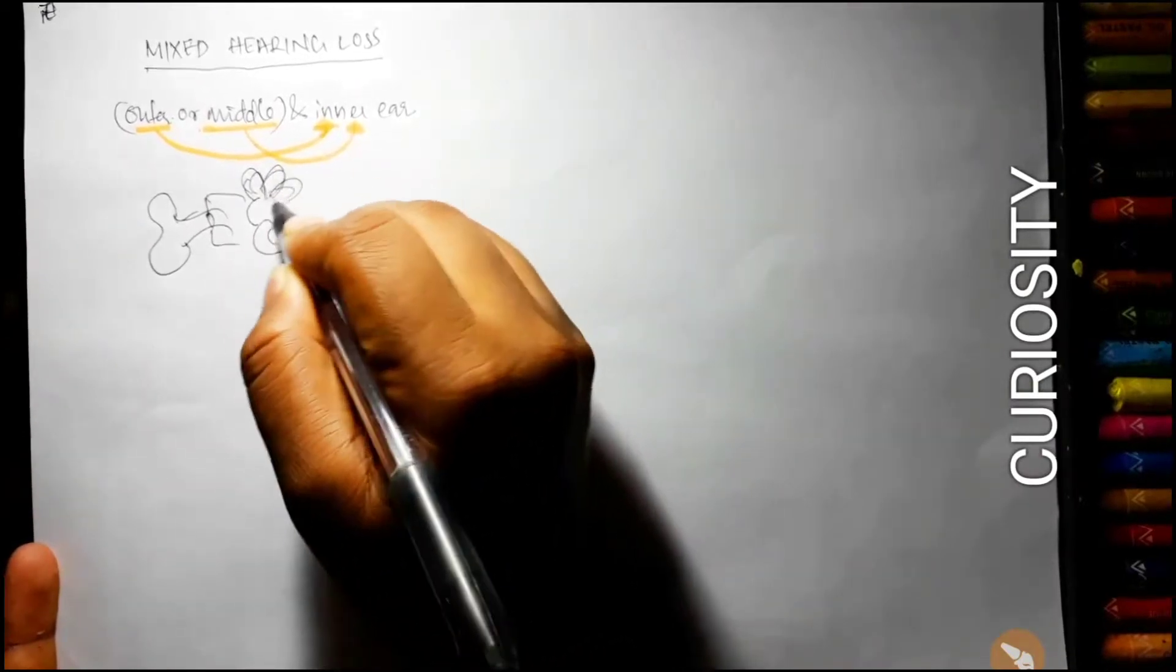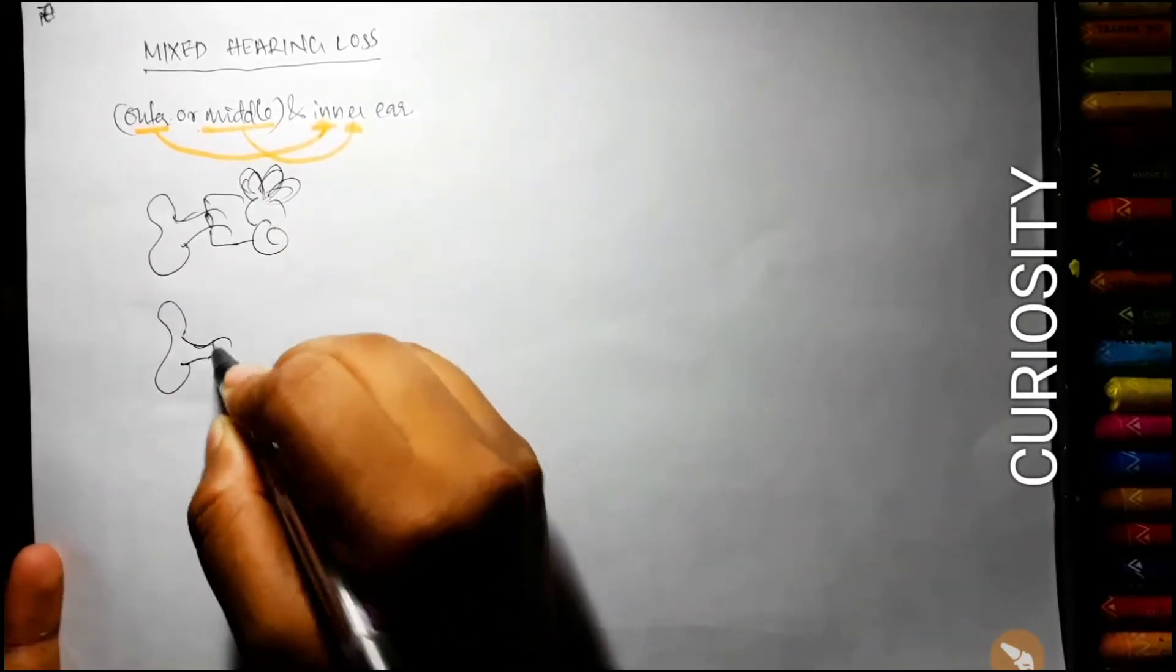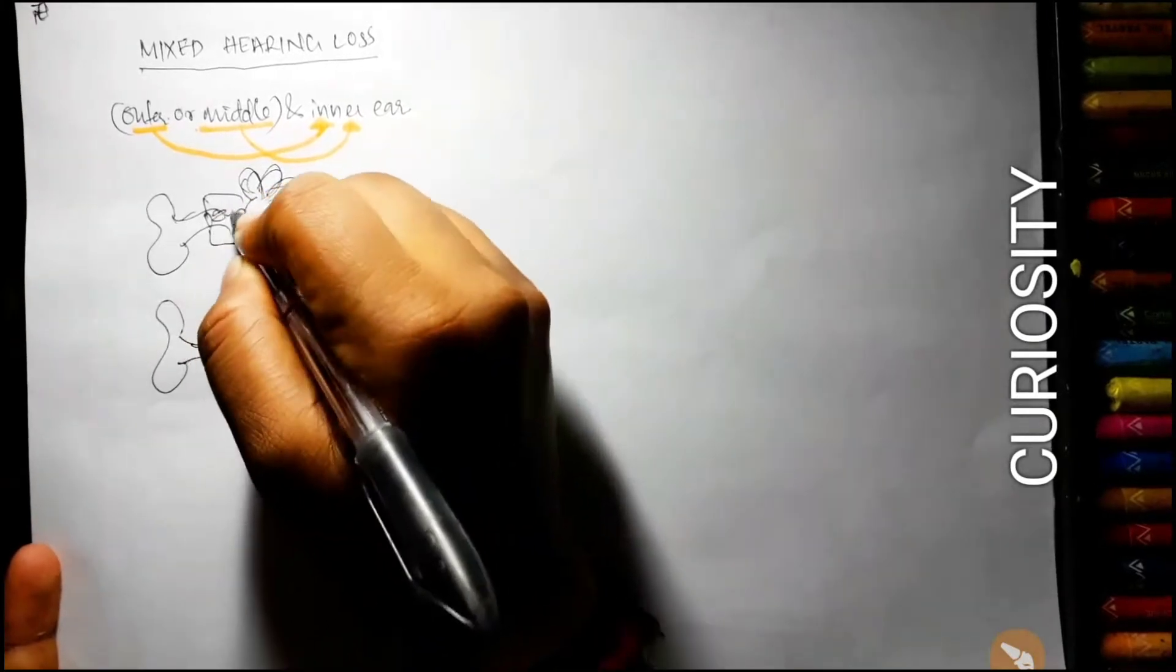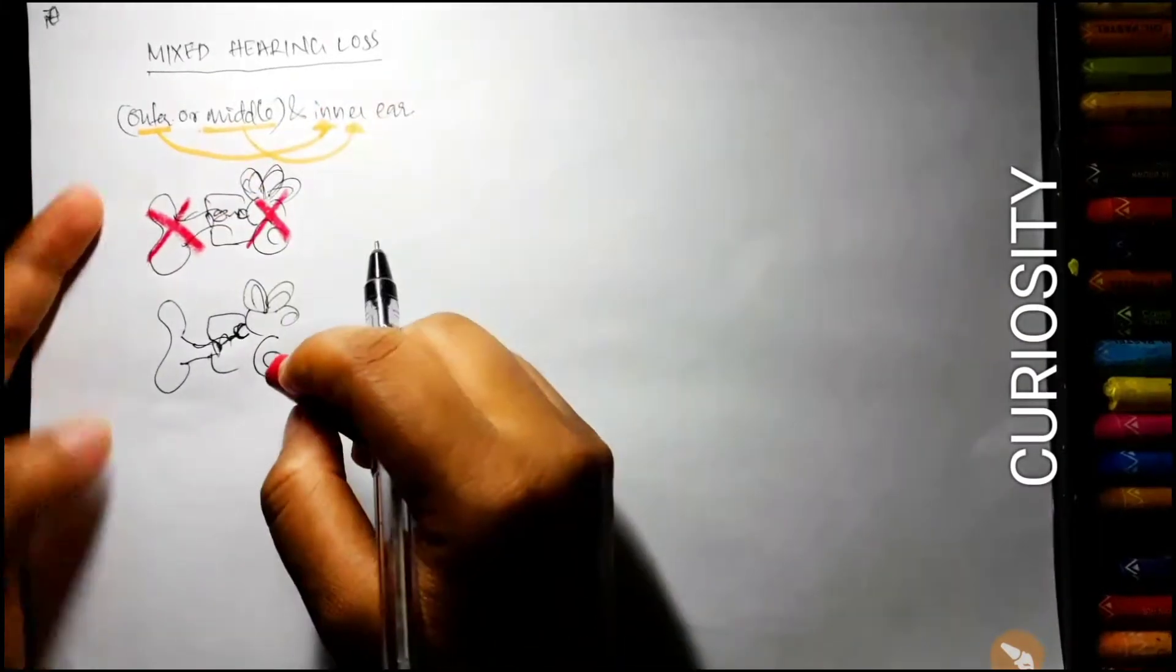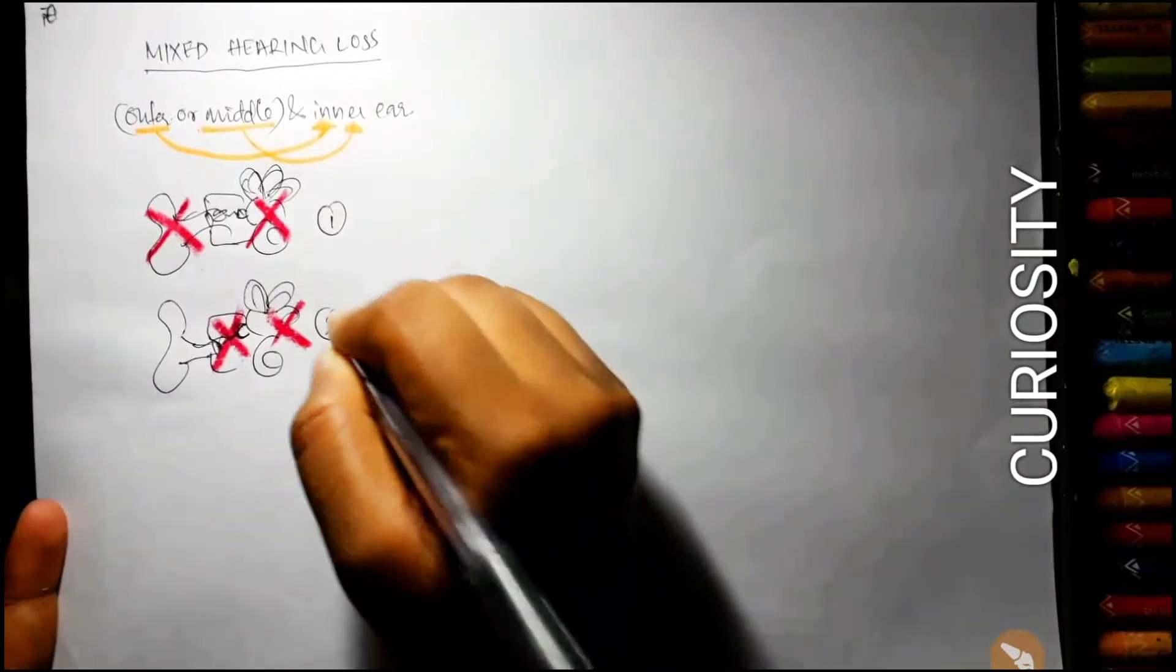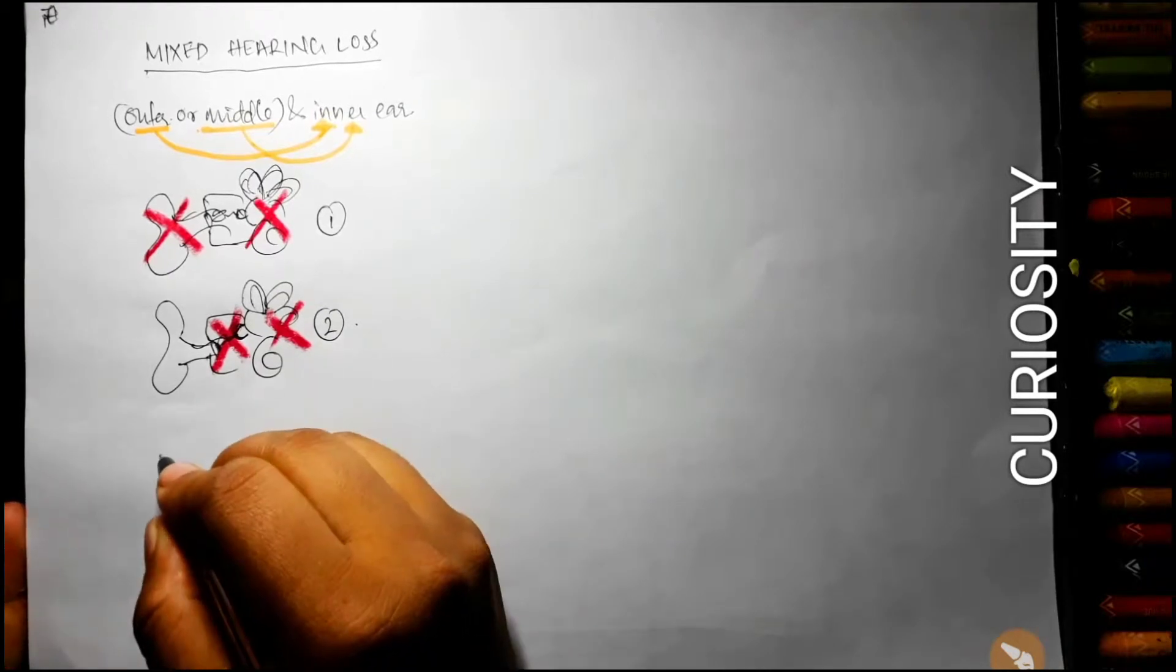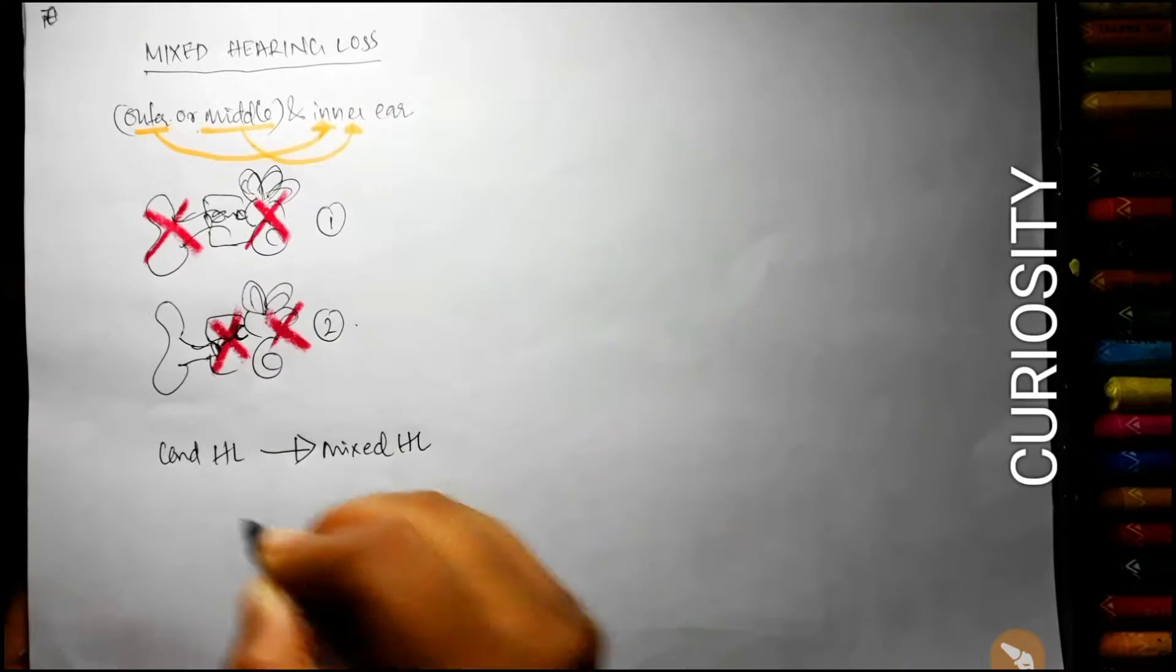If you draw the basic diagram, I will explain about two conditions where mixed hearing loss can be possible. This is a rough sketch of the ear. The first condition is where the outer and the inner ear is being pathological, and the next condition is inner and middle ear being affected.